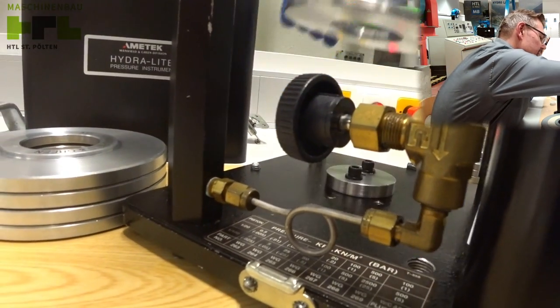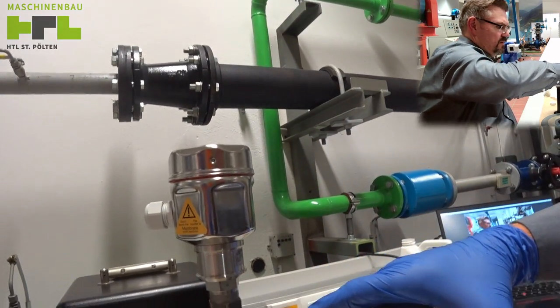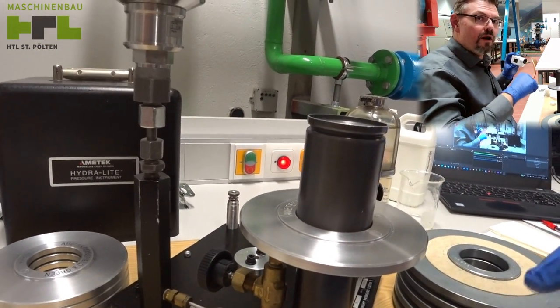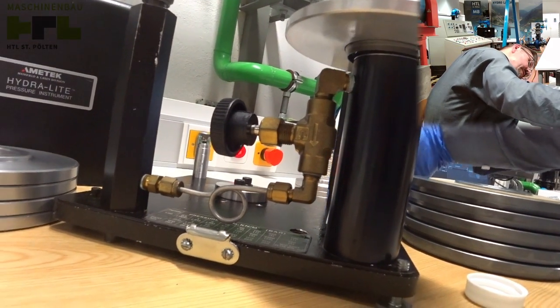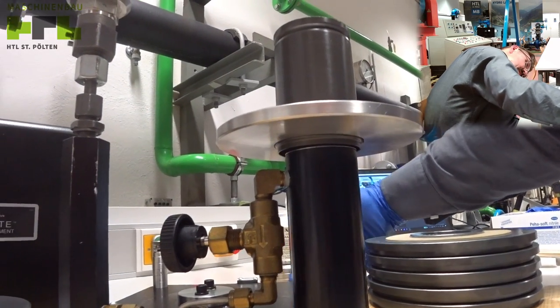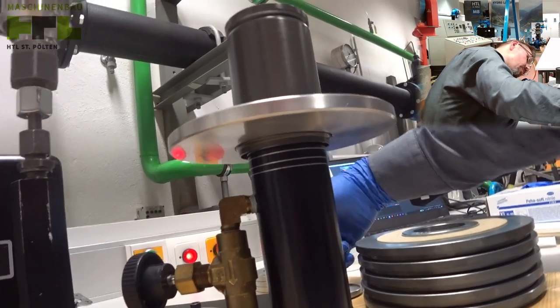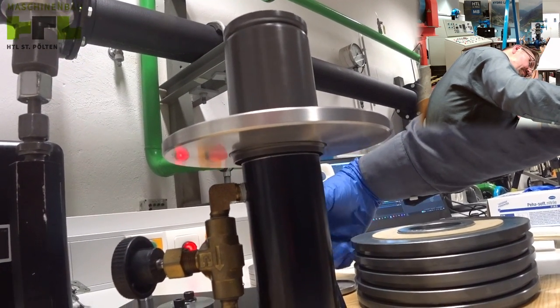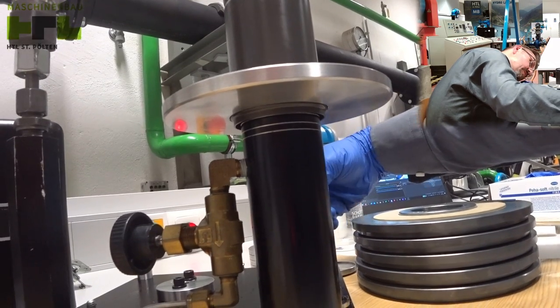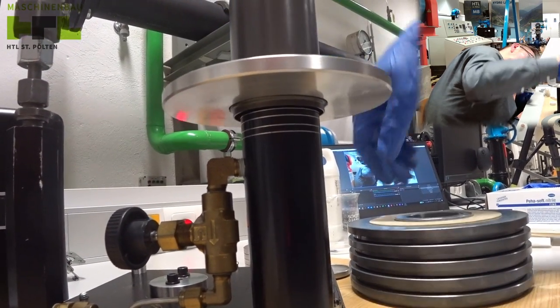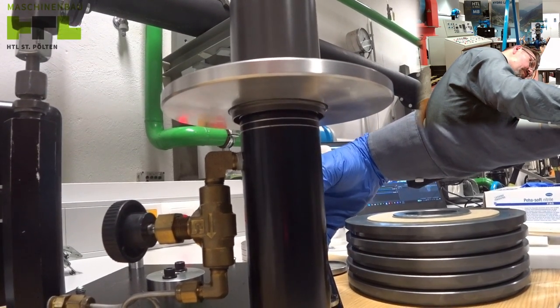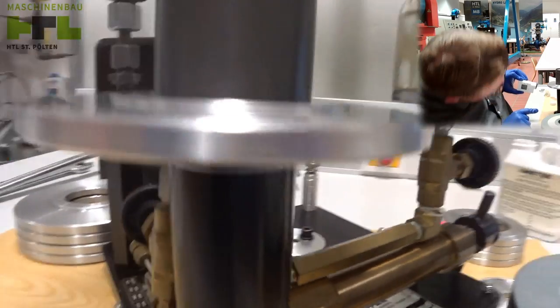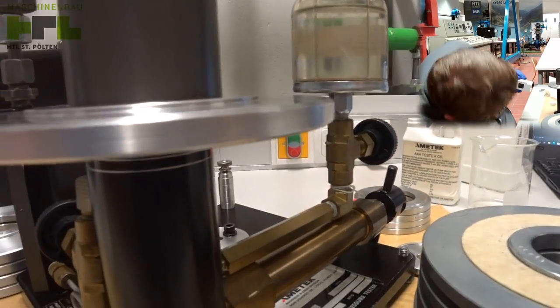So we now take this weight. This is the reference weight. With this weight on, this piston inside will have exactly one bar pressure. Let's see until it is lifted. And it should always turn, you know, it should always turn, that we are not influenced by friction.